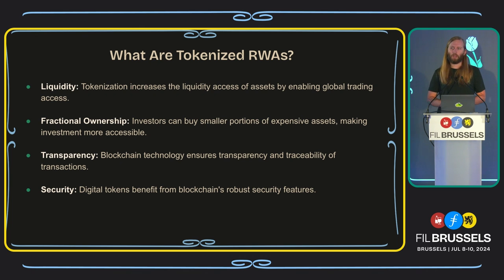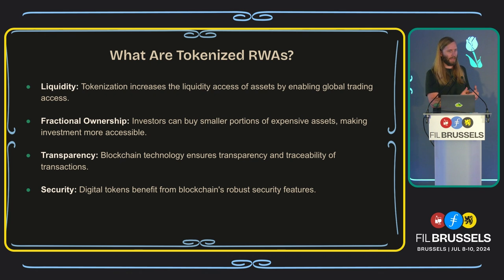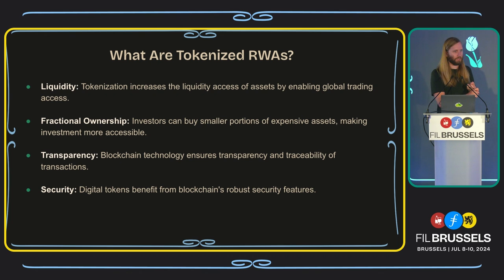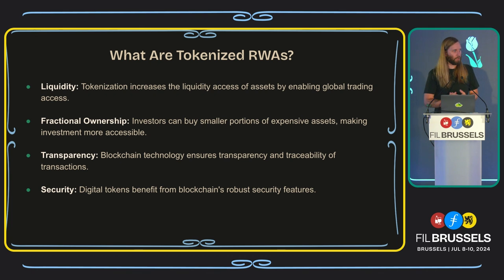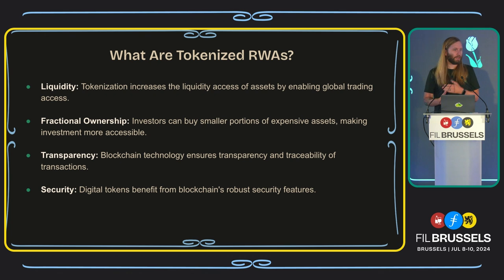And then security. If everything about an asset is in an internal bank database and ransomware hits that database, you have a problem — it's centralized and non-transparent. If it's on a blockchain, you gain the security of the blockchain and the transparency. It's not as easy to attack or destroy the provenance of assets that you want to guarantee are correct.